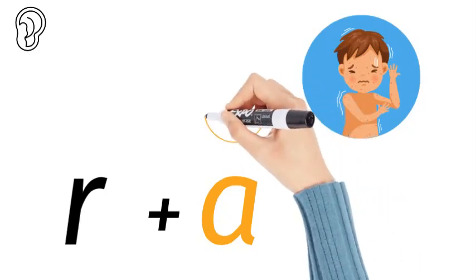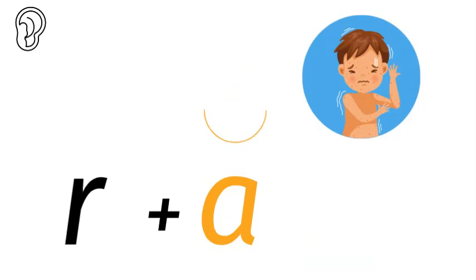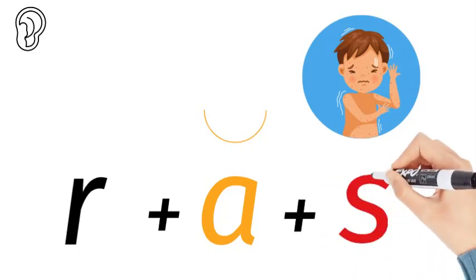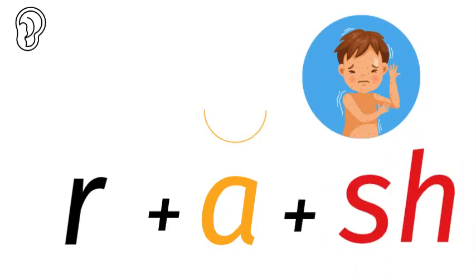A for apple. R-A. Now we're missing something. R-A, what's at the end? R-A-SH. Now how do we write the SH? It's an S and an H. R-A-S-H.